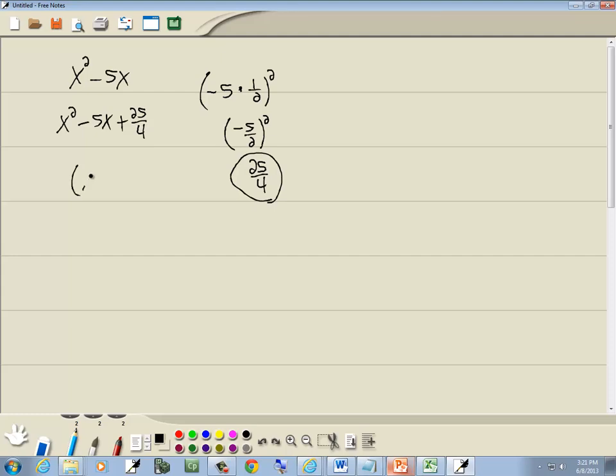And then we'll factor this. This factors as x minus 5 halves squared. Now, remember the little trick for that. Whatever number is in the parentheses right here, right before you square it, is always what goes right down here, sign included. Makes that step so easy for the factoring.